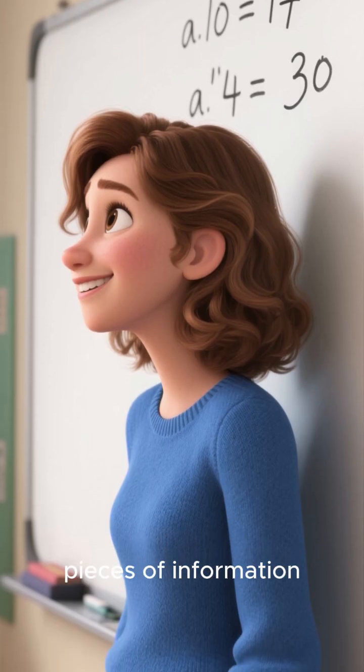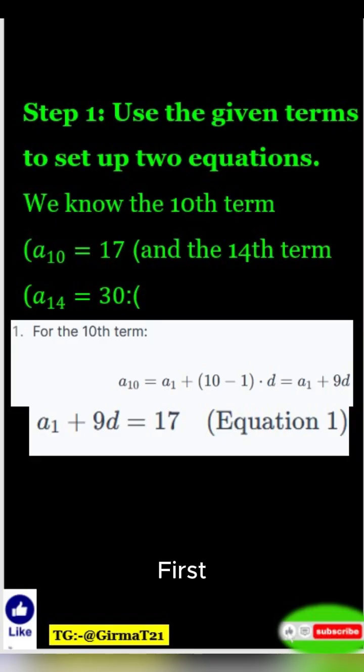We're given two pieces of information. First, the 10th term is 17. Plugging this into our formula gives us a_10 = a_1 + (10-1)d. Since we know a_10 is 17, our first equation is a_1 + 9d = 17.